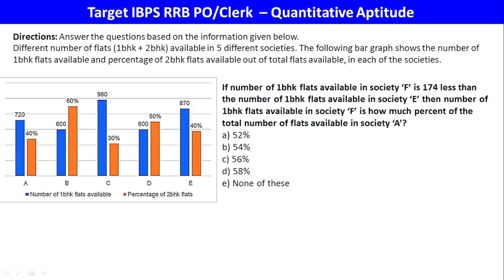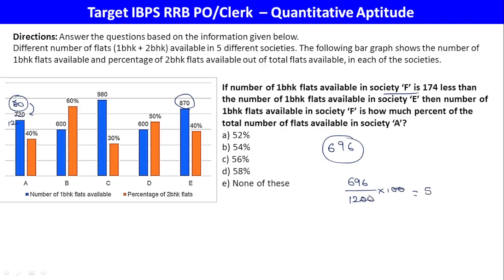Next question: If 1BHK flats available in society F is 175 less than 1BHK in society E, which contains 800 — so 1BHK in F equals 800 minus 175 equals approximately 696. Then 696 is what percentage of total flats: 696 out of 60% being 720, so total is 1200. 696 divided by 1200 equals 58%. Option D is the final answer.